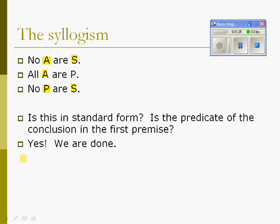Now, using the different rules, I can determine: it's not the fallacy of undistributed middle because both middle terms are distributed, so we're fine there. But if we look at what's distributed in the conclusion, notice both terms are distributed. S is also distributed in the premise, so this is not the fallacy of illicit major. But P is distributed in the conclusion but not in the premise.